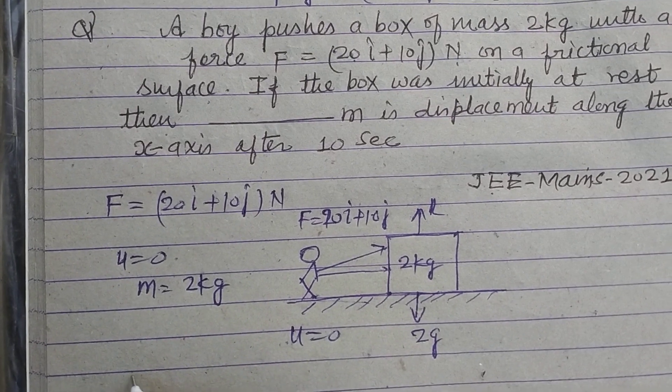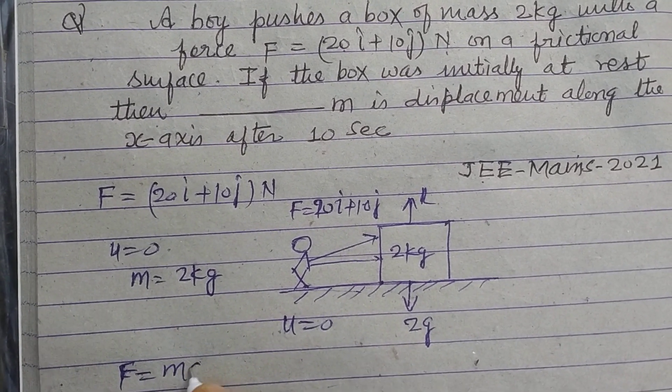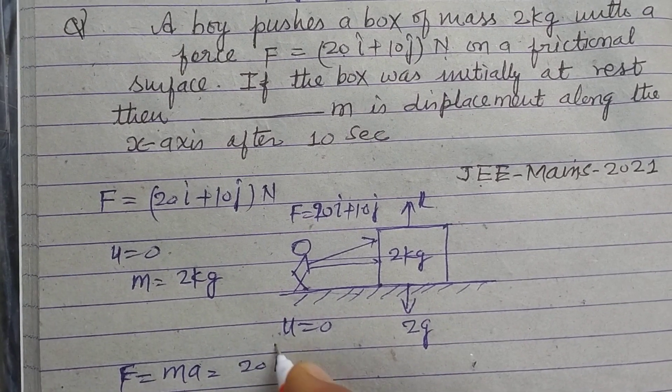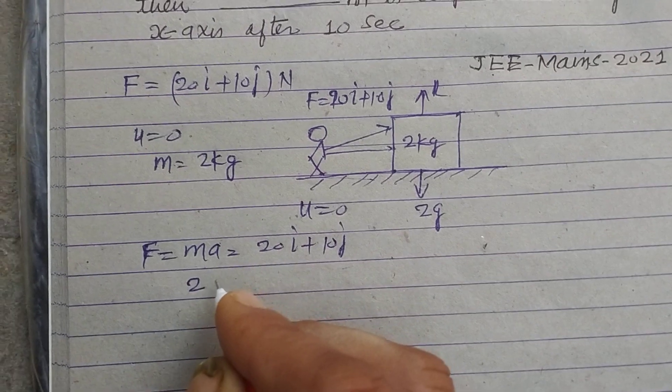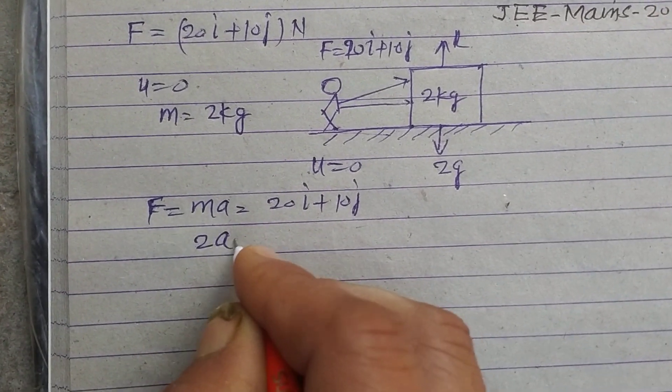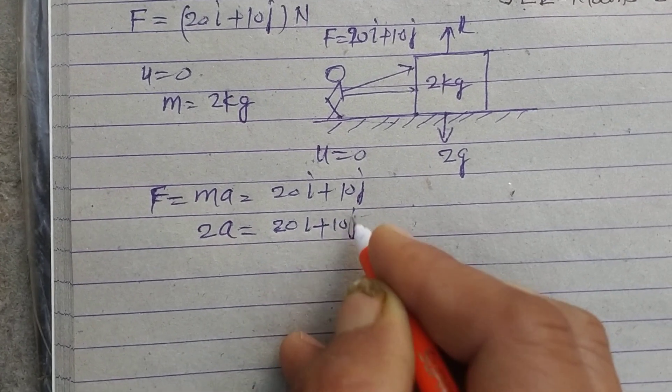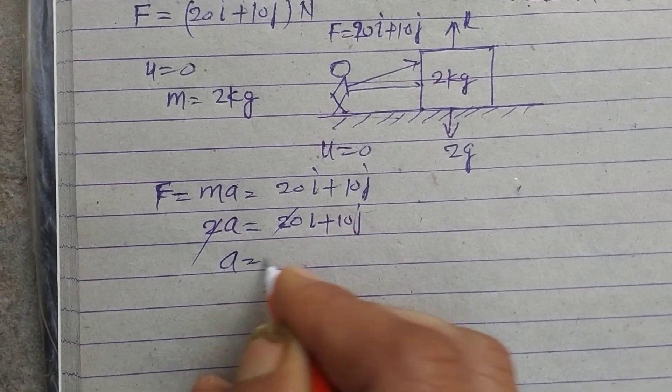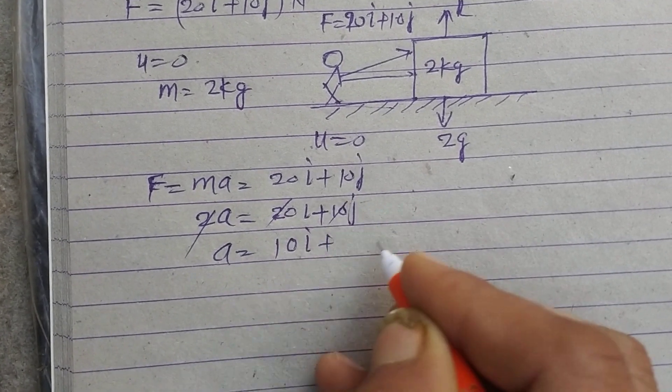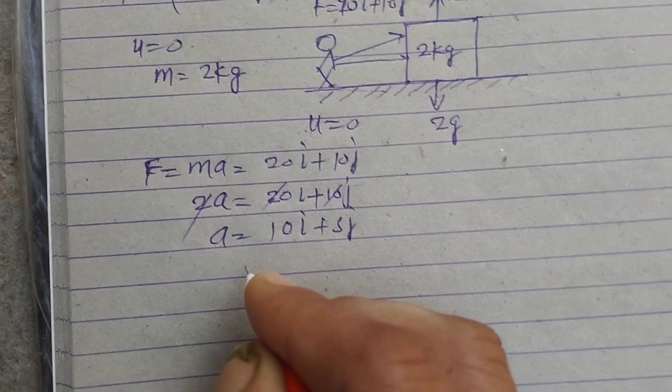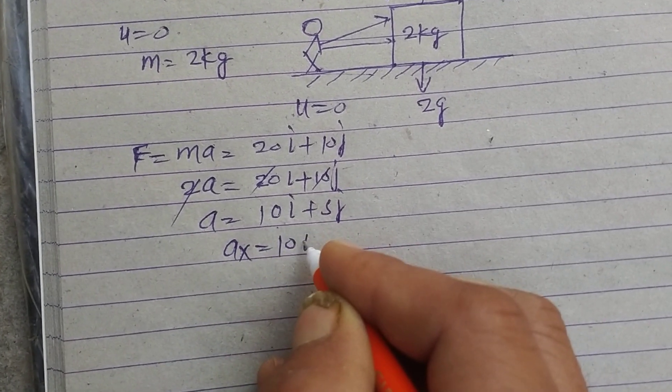So the acceleration of the box is F equal to ma equal to 20 i cap plus 10 j cap. This is 2 kg mass of block. So 20 i cap plus 10 j cap divided by 2 gives 10 i plus 5 j. Now acceleration in x direction is 10,